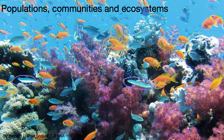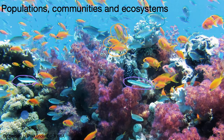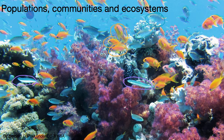The ecosystem includes all of the above, plus the water, plus the oxygen that is in the water, plus the sand at the bottom of the ocean. Hopefully you now have a sense of what biologists are talking about when they talk about populations, communities, and ecosystems.